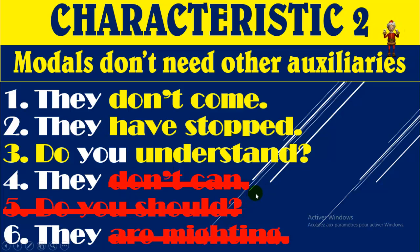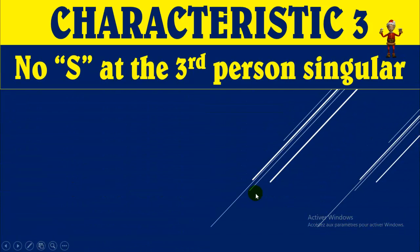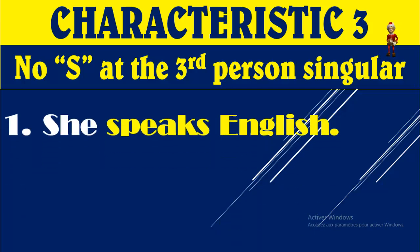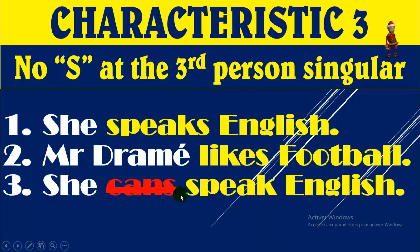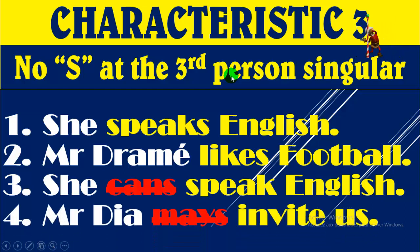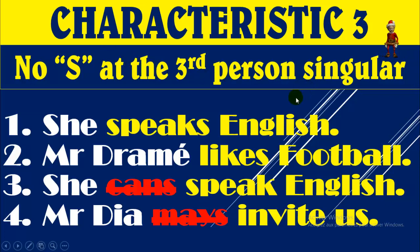Characteristic number three: no -s at the third person singular in the simple present. In the simple present: 'She speaks English' — you have -s; 'Mr. Drame likes football' — you have -s at the third person singular. But with modals: 'she cans' is impossible — don't put -s at the end of a modal at the third person singular. Modals don't take -s. 'Mr. James mights' — impossible, that's a big mistake. Don't put -s at the end of a modal. No -s at the third person singular.